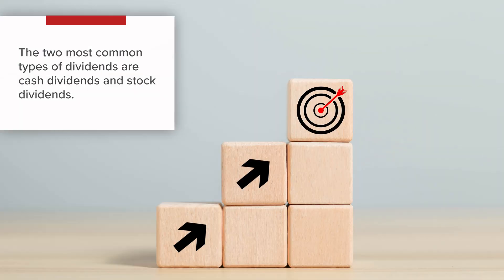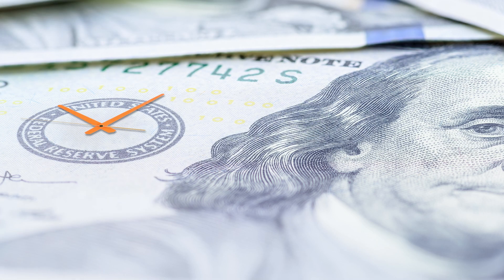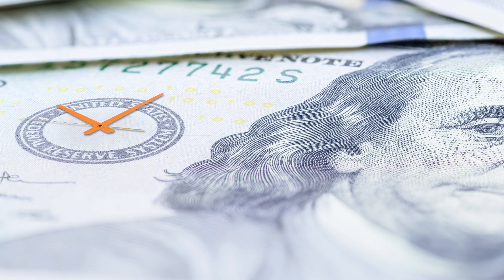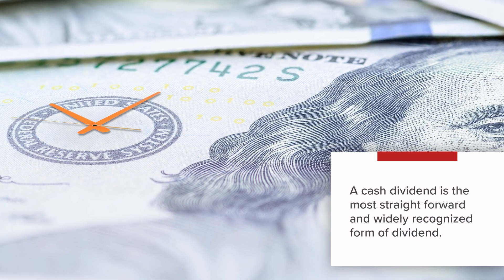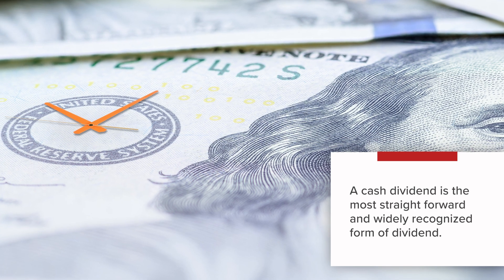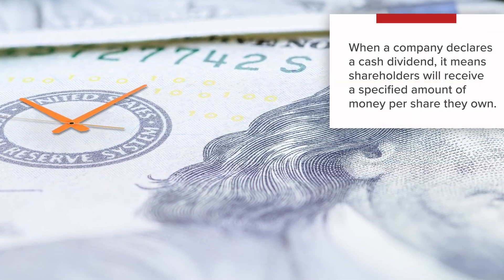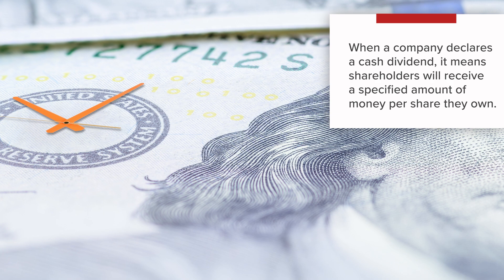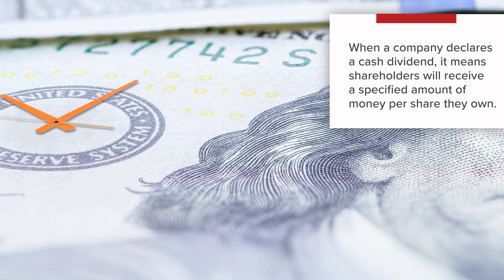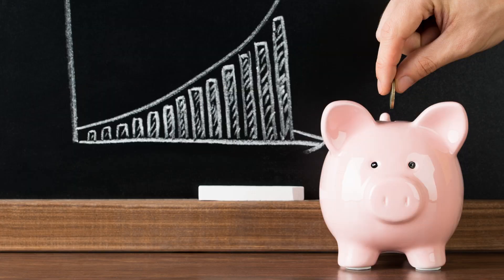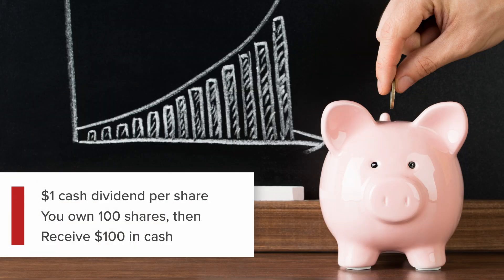The two most common types of dividends are cash dividends and stock dividends. A cash dividend is the most straightforward and widely recognized form of dividend. When a company declares a cash dividend, shareholders will receive a specified amount of money per share they own. For example, if a company declares a $1 cash dividend per share and you own 100 shares, you will receive $100 in cash.